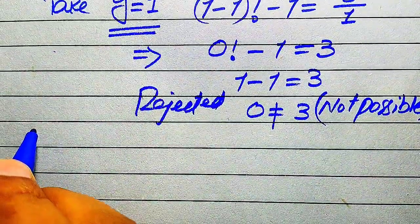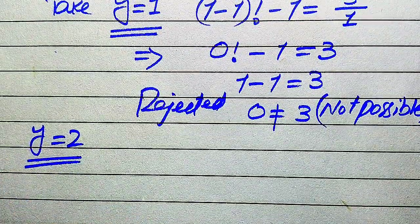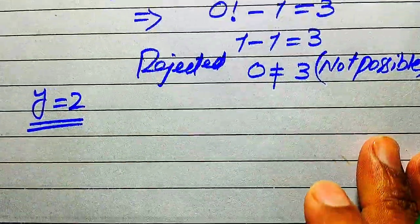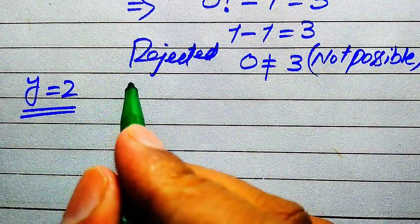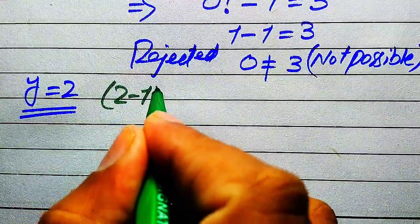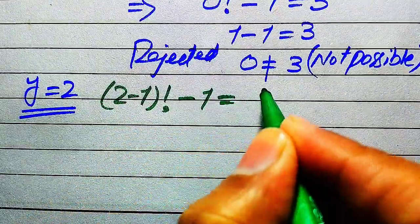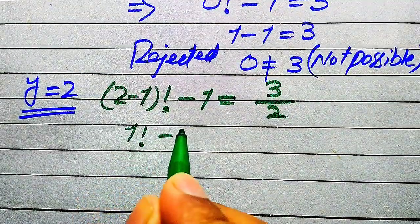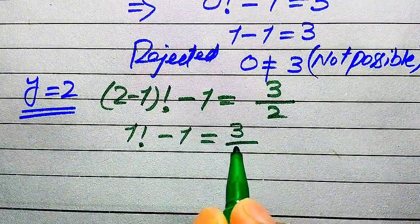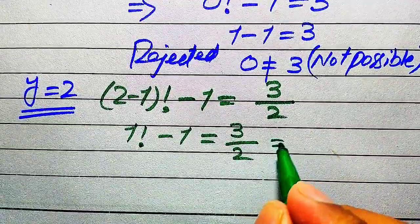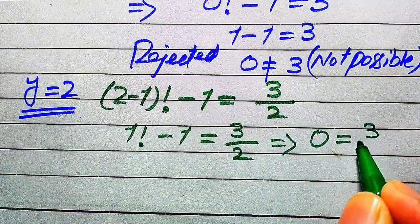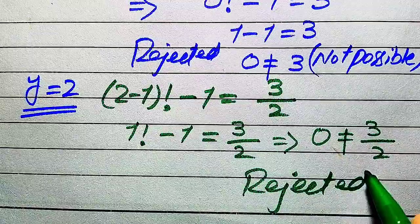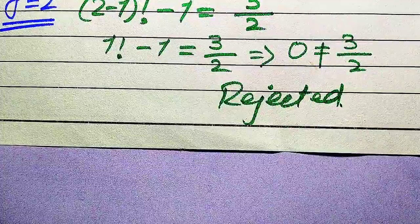Next, we try y equals 2. Substituting gives (2 minus 1) factorial minus 1 equals 3 divided by 2, which becomes 1 factorial minus 1 equals 3/2, giving 0 equals 3/2. This again does not satisfy the equation, so we reject y equals 2.